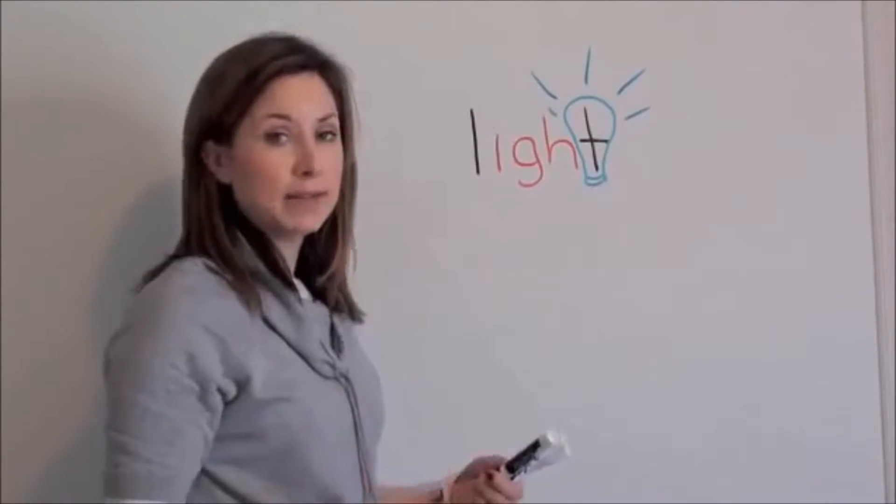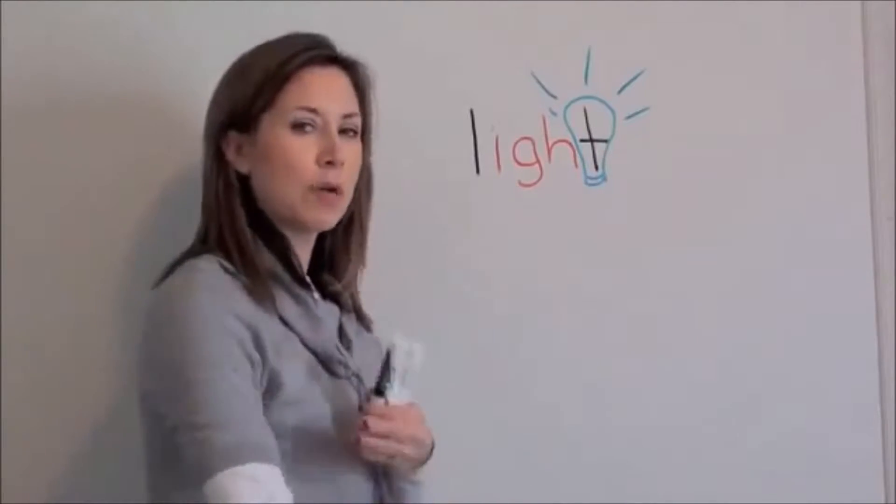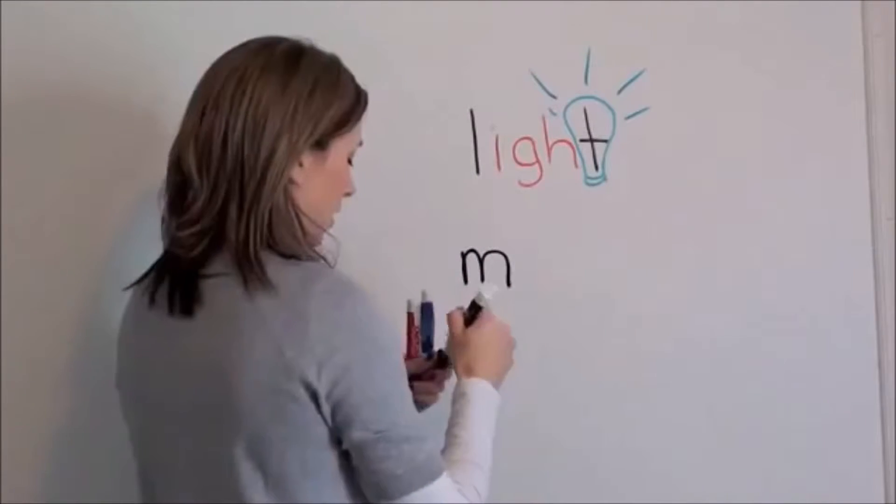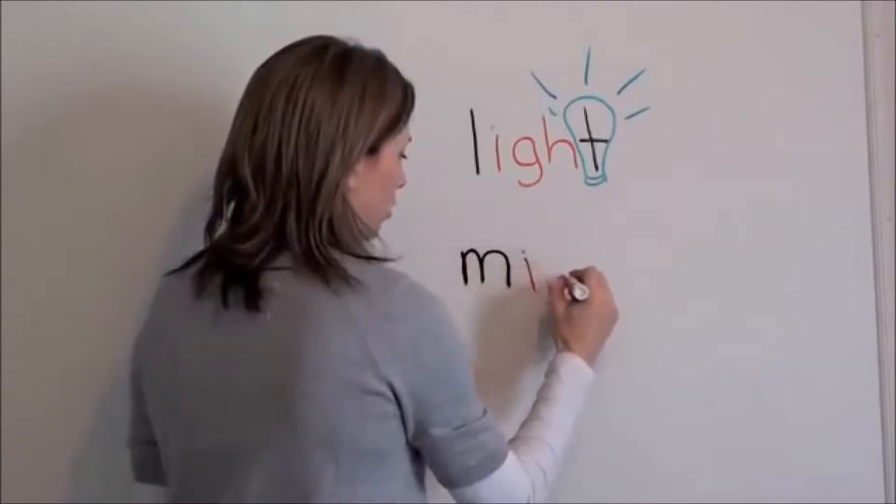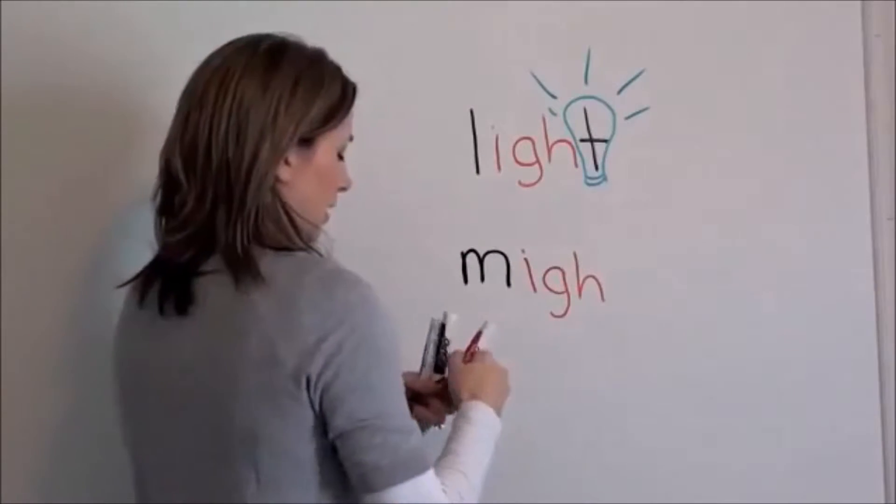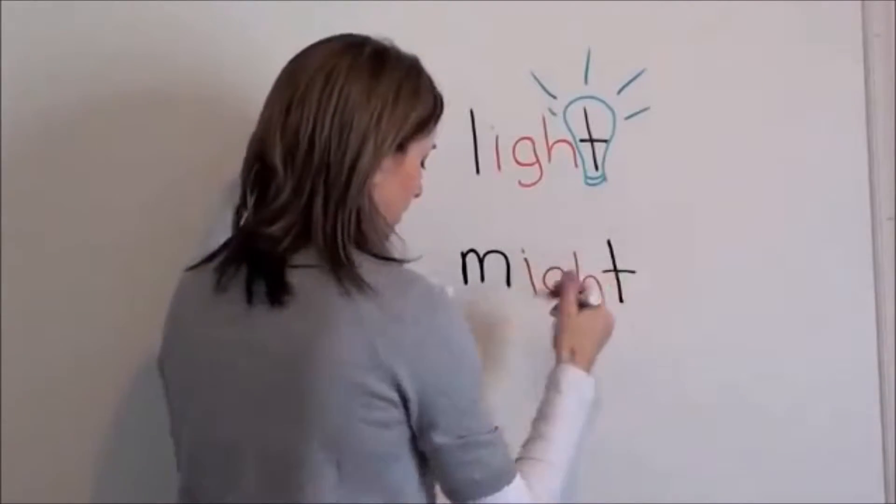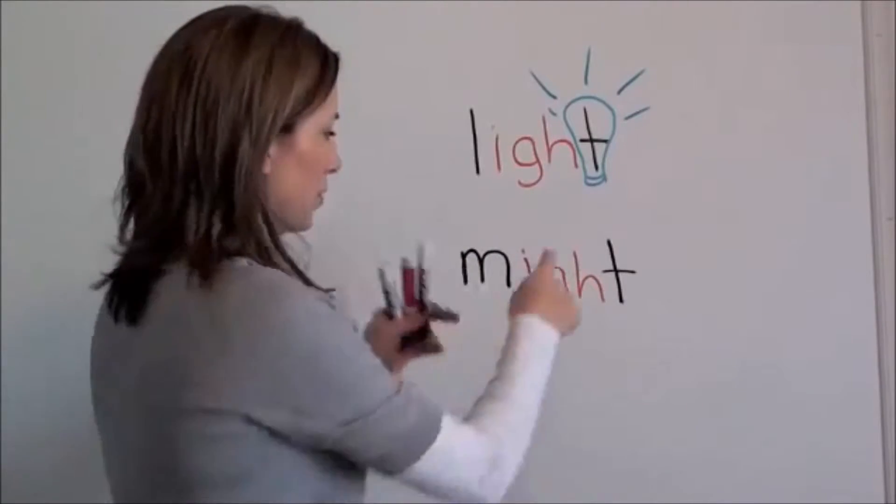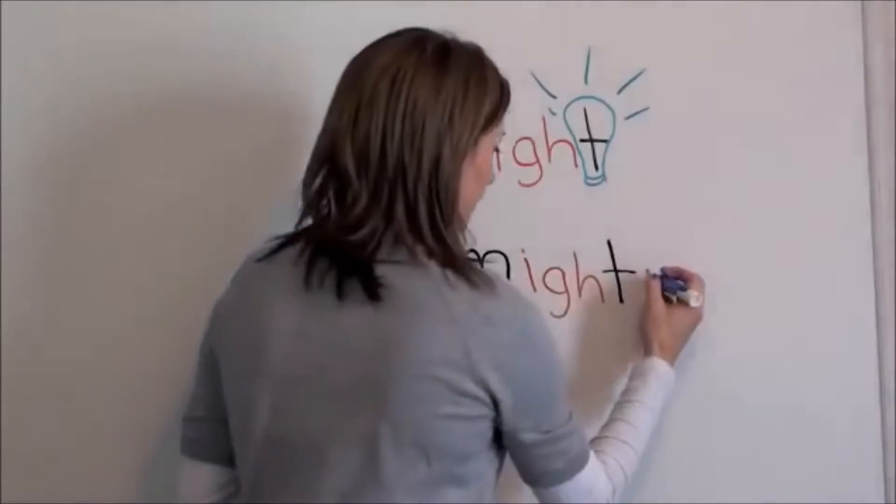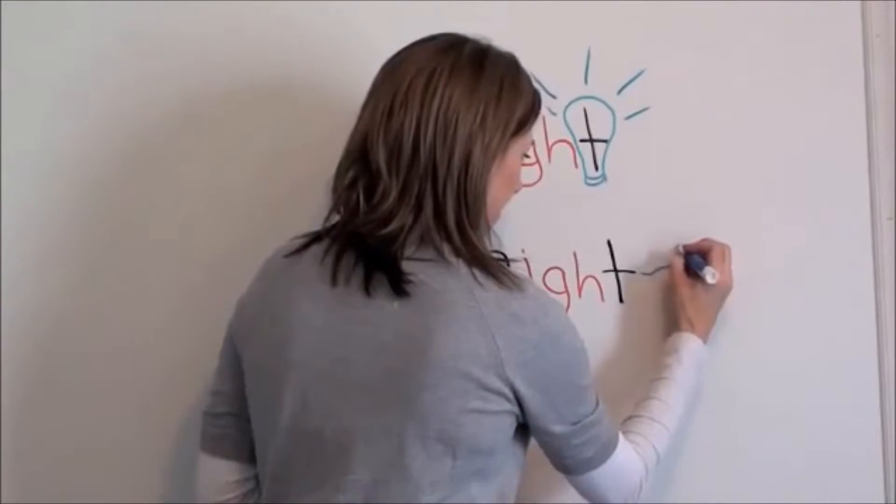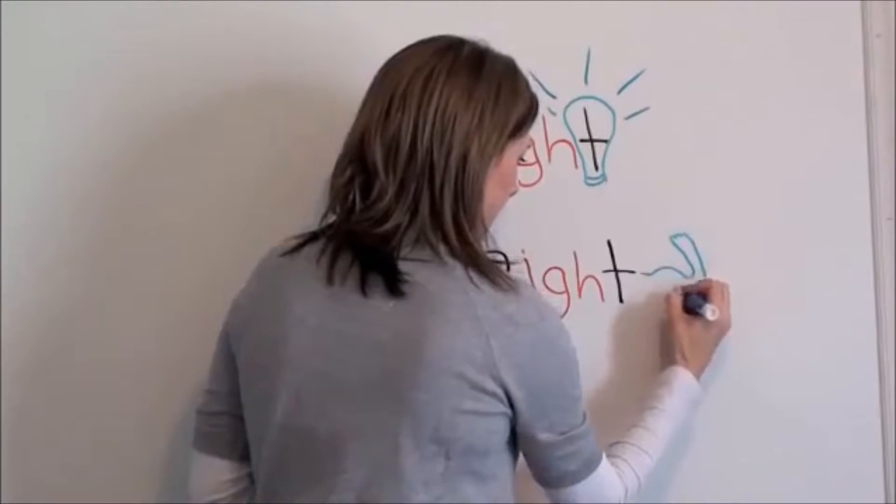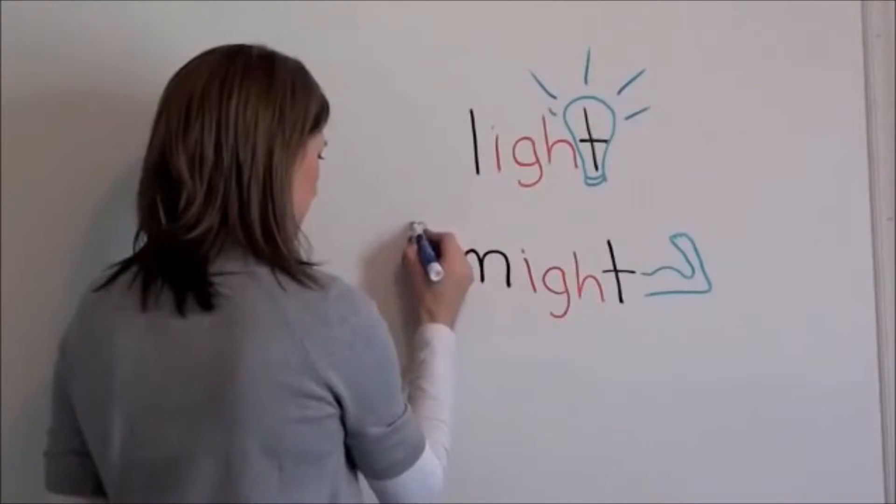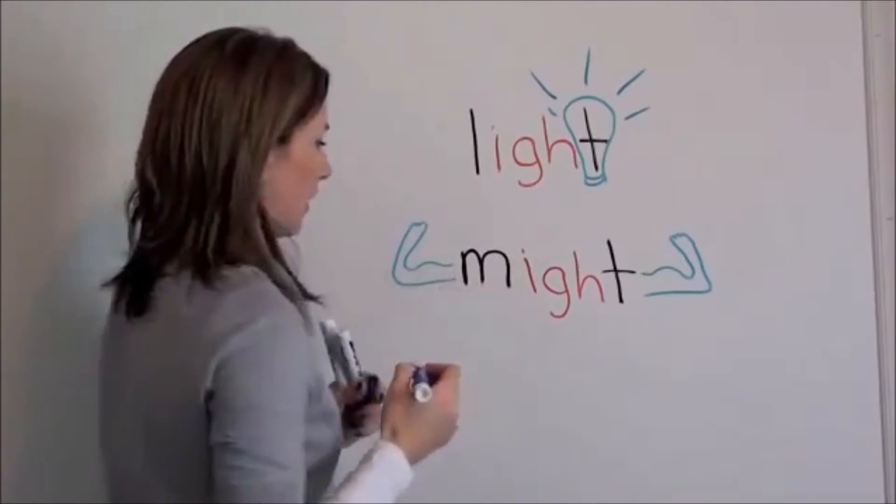The second word that I'm going to demonstrate is might. When I think of might, I think of strong. So I'm going to attempt to draw strong arms. So again, write my word, M is in black, I, G, and H will be in red, and T will be in black. And since there's no real good way within the word that I can see to do strong arms, I'm just going to tack it on to the end. And there is might.